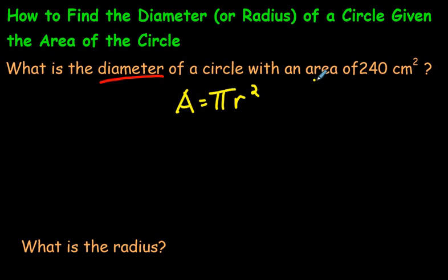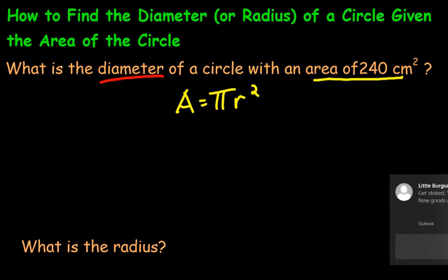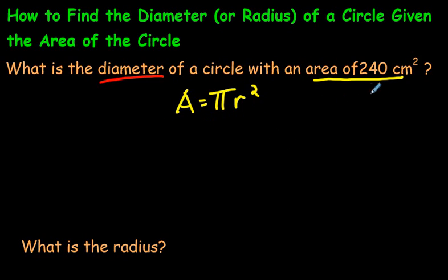Now in this case they gave us the area is 240 centimeters squared. So what we're going to do is 240, and what we're going to do is, we remember pi is 3.14. Please watch previous videos if you forgot that. I don't mean to spring that on you now. And over here we have r squared.